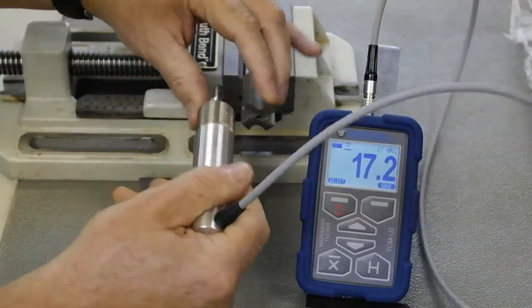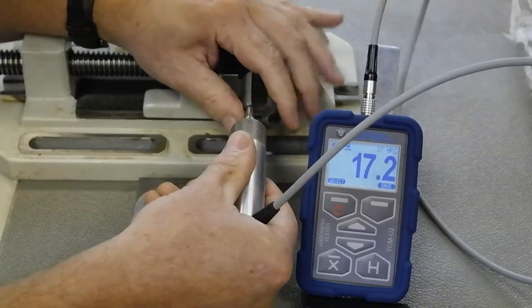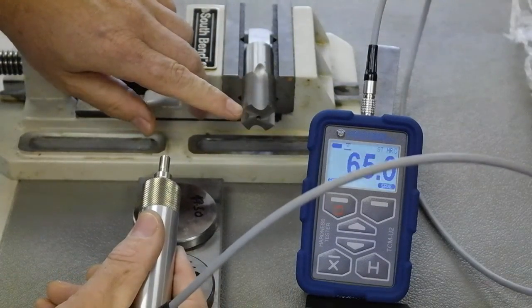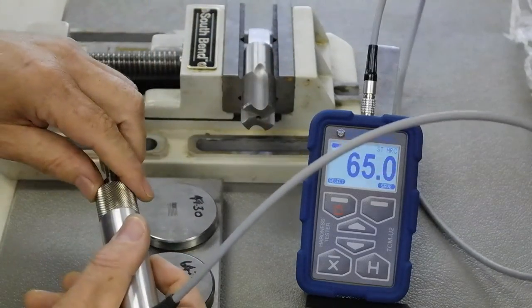So I can actually free hand this as well on the part. Press. And there it's showing that this area is extremely hard. So we're getting a 65 HRC.